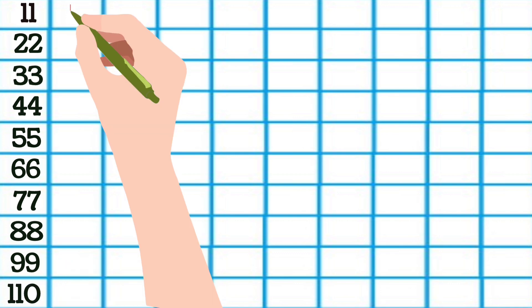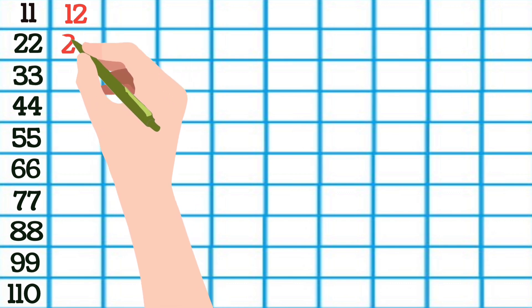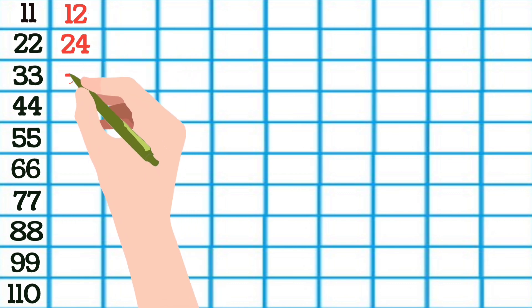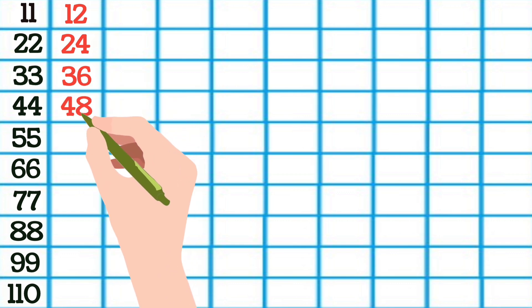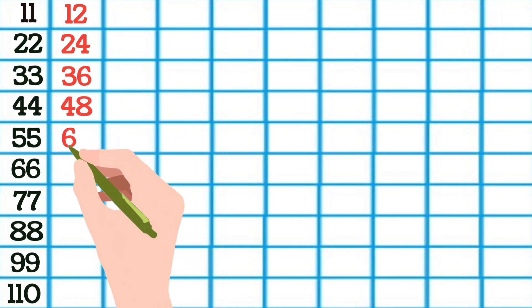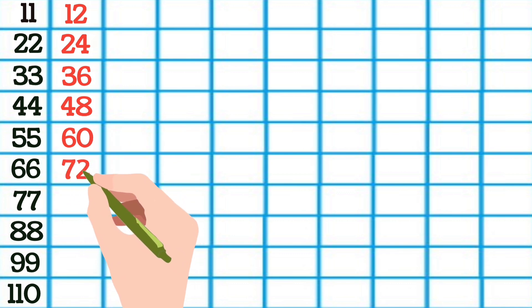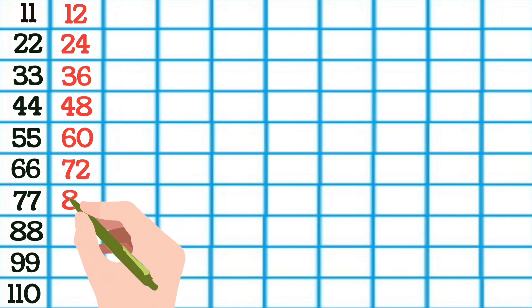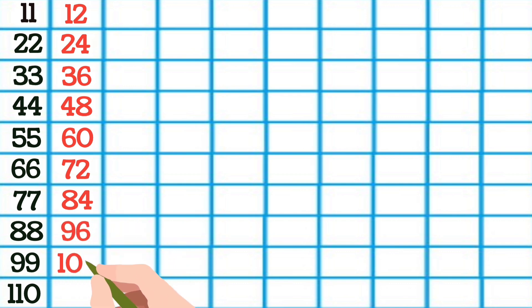11 10s are 110. 12 1s are 12, 12 2s are 24, 12 3s are 36, 12 4s are 48, 12 5s are 60, 12 6s are 72, 12 7s are 84, 12 8s are 96, 12 9s are 108, 12 10s are 120.